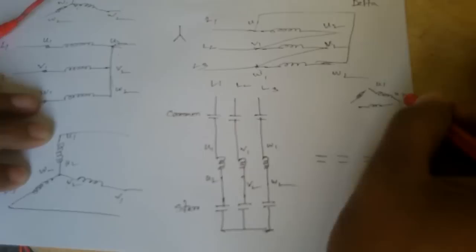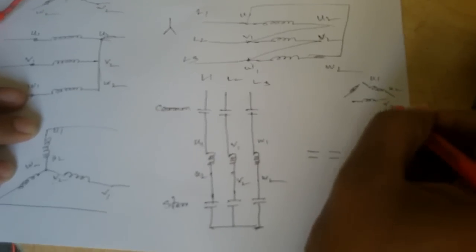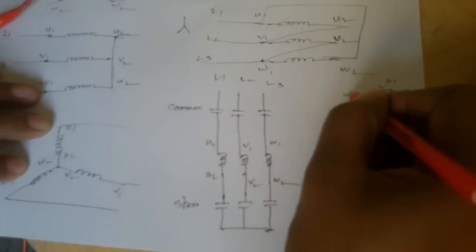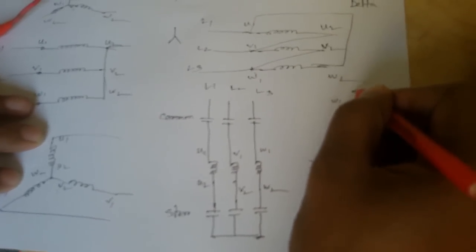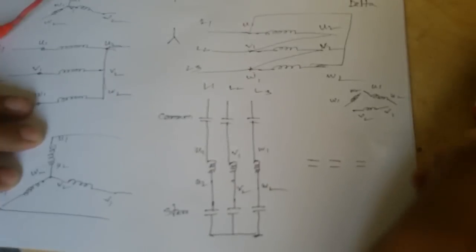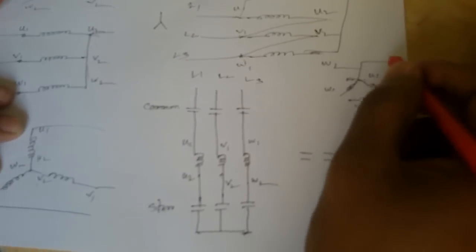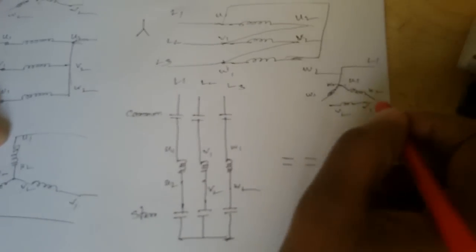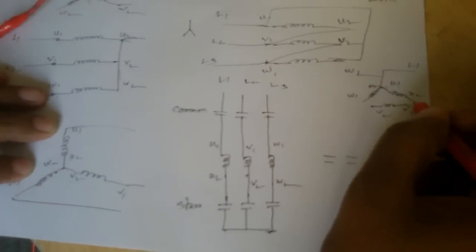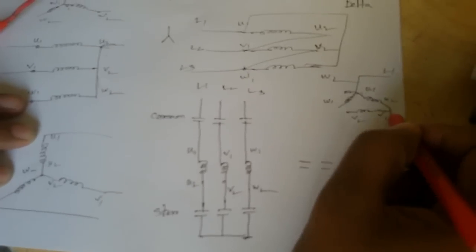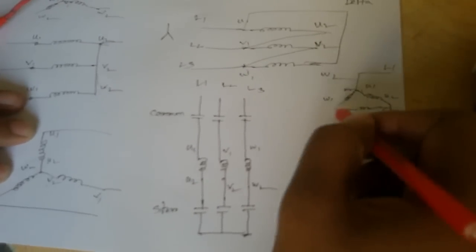For the delta connection: U1 connects to W2 at one junction, and that junction gets Line 1 supply. V1 gets Line 2. And U2 gets Line 2 when we make the delta connection. The supply lines are connected: Line 1 here, Line 2 here, Line 3 here. Each supply line feeds into the corresponding delta junction point.